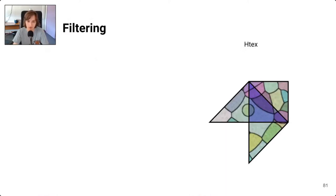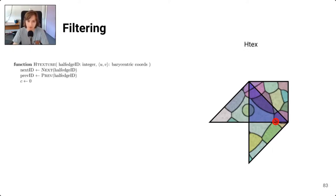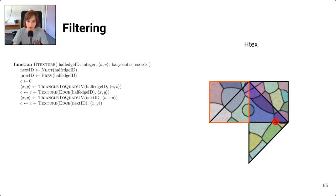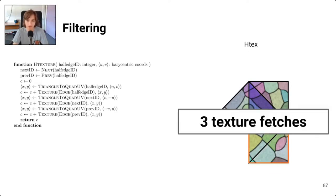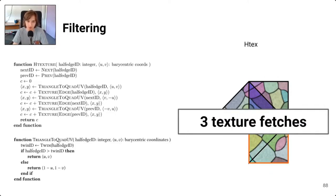Our filtering algorithm is very simple and fits on a single slide. Drawing the blue triangle, we want to integrate the texture under the footprint. We first find the neighbors using the half-edge operators next and prev, then do a first texture fetch for the quad containing the blue triangle — the hardware filtering unit integrates the footprint portion inside that quad. We do a second fetch for the quad containing the first neighbor, and a third for the other neighbor. With just three texture fetches we get seamless filtering. The code consists of half-edge operator calls, texture fetches, and a small triangle-to-quad UV transform function, all fitting on one slide.